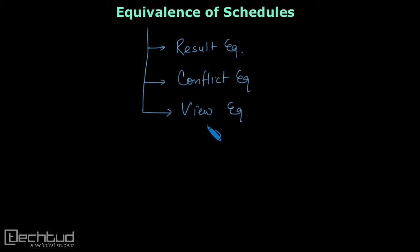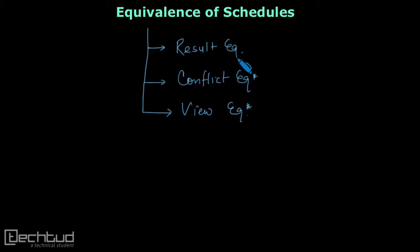These two — conflict equivalent and view equivalent — we will understand in next lectures. In this lecture, we will understand what is result equivalent. What are result equivalent schedules, and when do we call a schedule to be result equivalent?